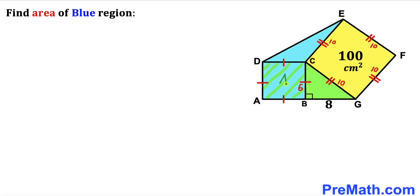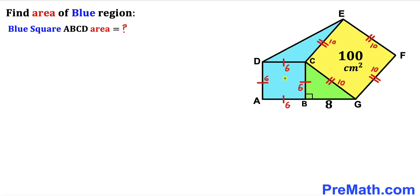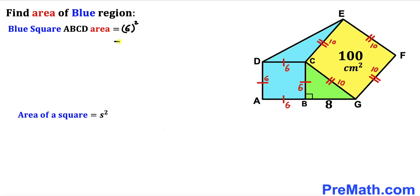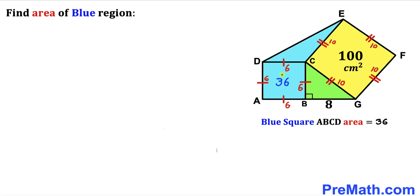The side length of the blue square is 6 centimeter. Focusing on blue square ABCD with side length 6 — since it's a square all side lengths are equal, so all sides are 6 centimeter. Recalling the area of a square formula, area equals s squared, the area of blue square ABCD is 6 squared, which equals 36 centimeter square.